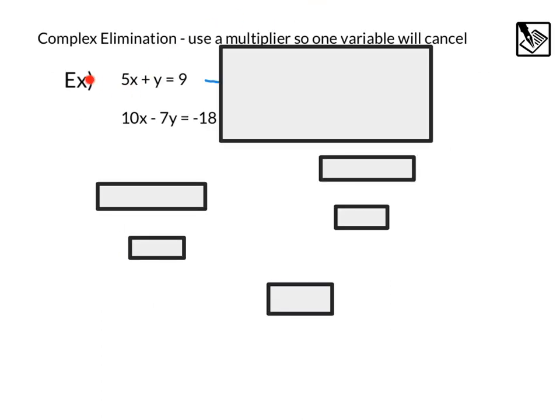Moving on, let's take a look at complex elimination. In this case, we can use a multiplier so one variable will be canceled. You might notice here, 5x plus y equals 9, 10x minus 7y equals negative 18, that if we add or subtract these, none of them will cancel. 5 and 10 won't cancel. Y and 7y won't cancel. So we won't be able to eliminate a variable.